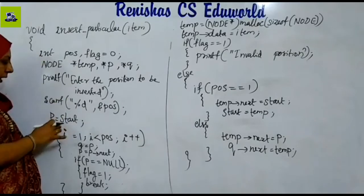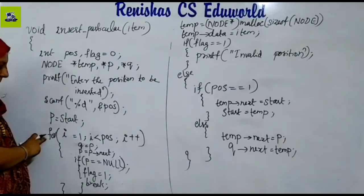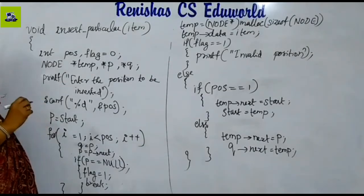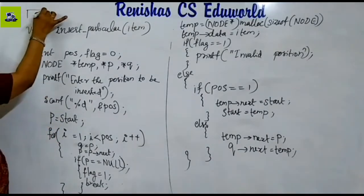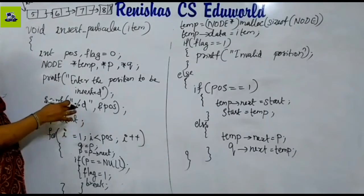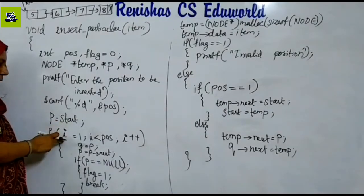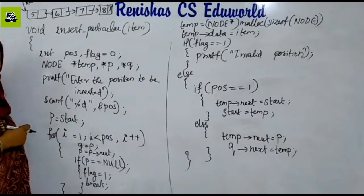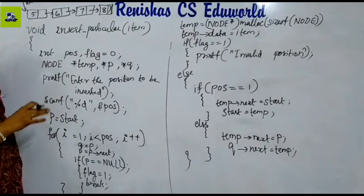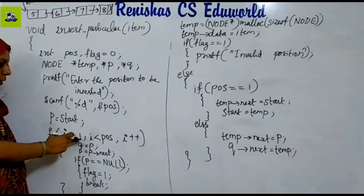The post is the third position and P is the starting point. We initialize two pointers P and Q. I is set equal to 1. We loop while I is less than pos. For each iteration, Q is assigned P's value and P advances to the next node.